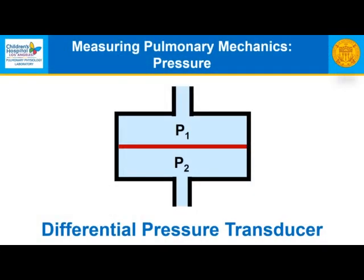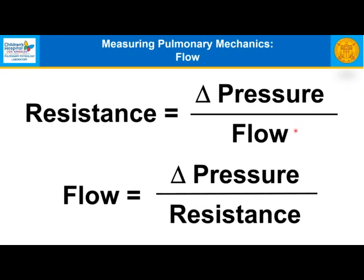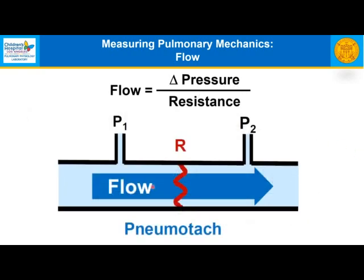In terms of measuring pulmonary mechanics, we measure pressure using a differential pressure transducer. One can connect something to each side; if the pressure on one side is greater, it deflects a membrane with an electrical circuit, and the deflection is proportional to an electrical output proportional to that pressure difference. Resistance equals change in pressure over flow in a tube. We can reconfigure: flow equals change in pressure over resistance. A device called a pneumotach has a fixed resistance — one can measure pressure before and after the resistance, and flow is proportional to this pressure difference because resistance is constant.